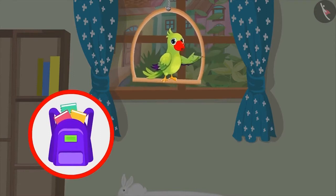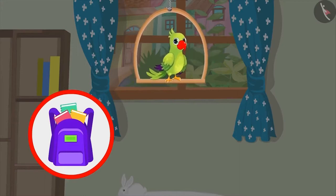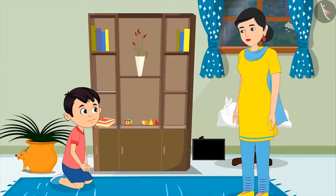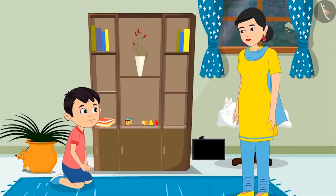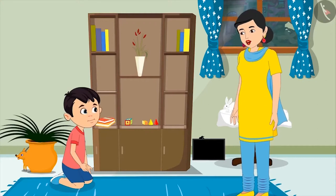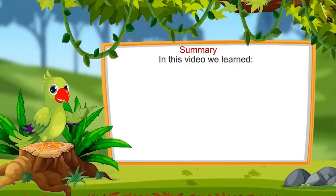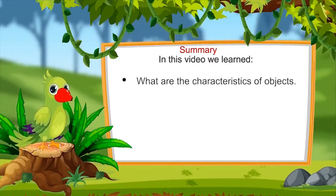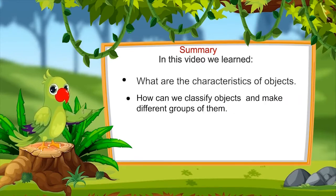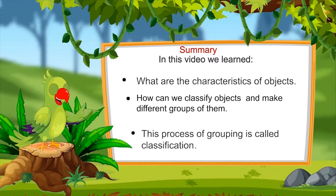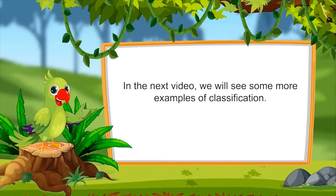This means that based on the characteristics, the process of classifying objects with similar characteristics and grouping them is called classification. Can you classify the books in your bag on the basis of their color and size? Okay son, it's night now — quickly put these toys back and go to sleep. I had a lot of fun today — we will play again tomorrow. That's all for today. In this video, we have learned what are the characteristics of objects, and on the basis of characteristics, how we can classify objects and make different groups. We also learned that this process is called classification. In the next video, we will see some more examples of classification. Bye friends.